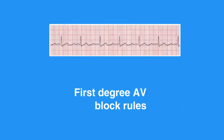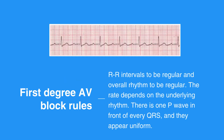First degree AV block rules include R-R intervals to be regular and overall rhythm to be regular. The rate depends on the underlying rhythm. There is one P wave in front of every QRS, and they appear uniform. The PR interval measures more than 0.20 seconds in duration and is consistent. The QRS complex measures less than 0.12 seconds.